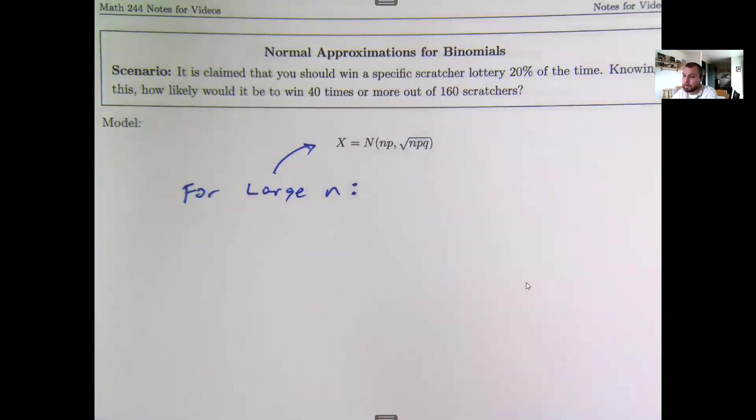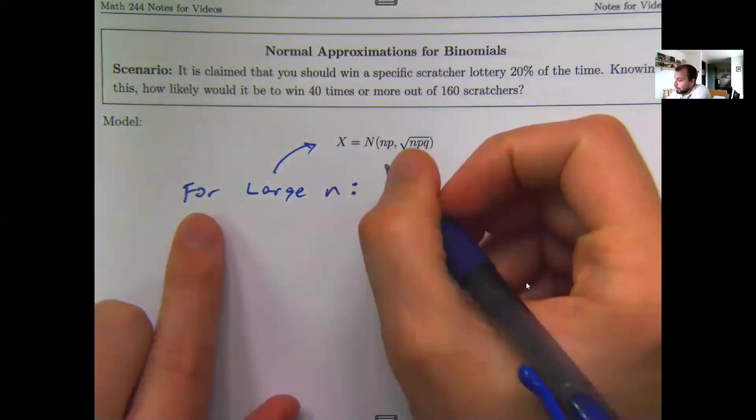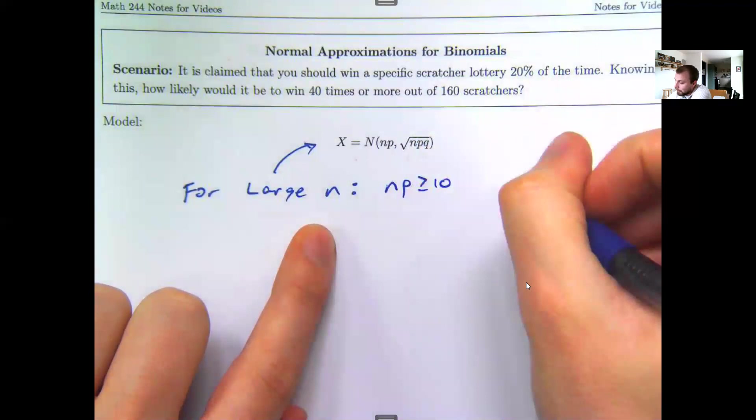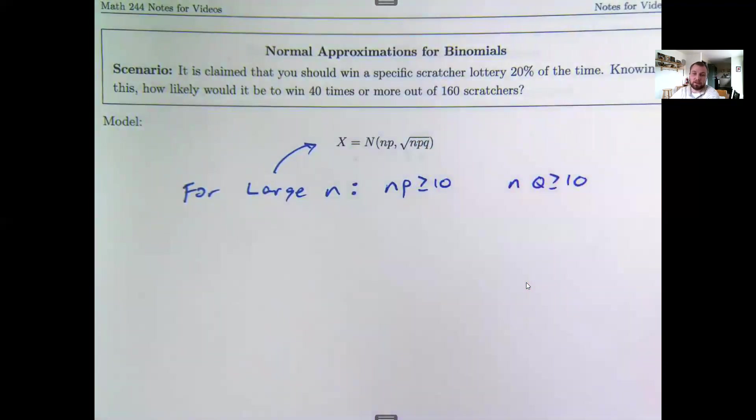We say for large n because binomials are kind of blocky, so it takes a lot of samples before that starts to look nice and smooth. In particular, it takes usually about until the point when you have n times p and n times q bigger than or equal to 10.